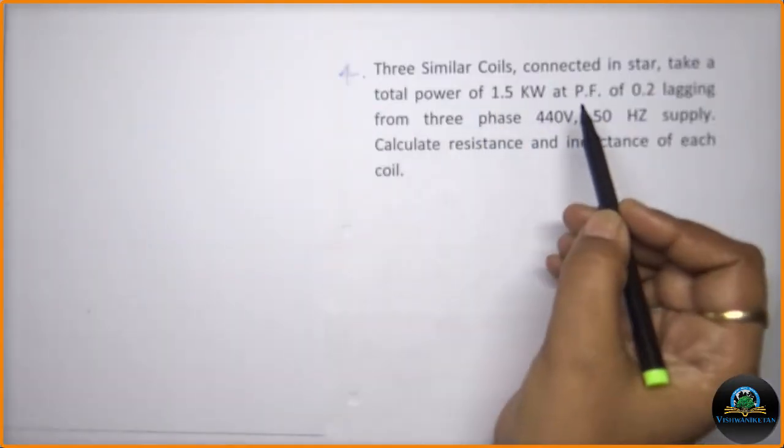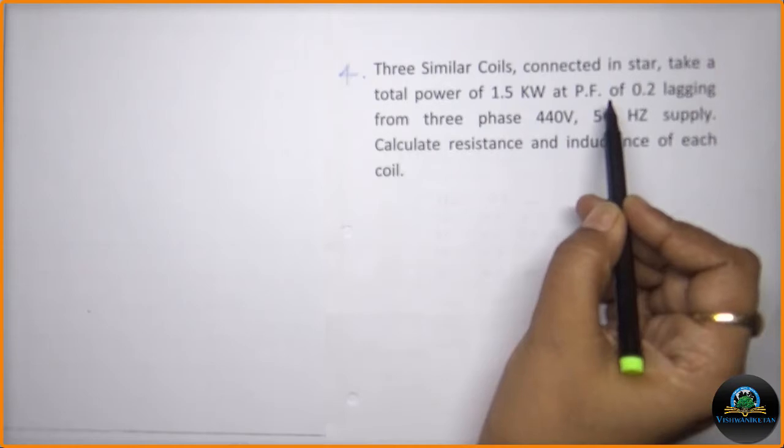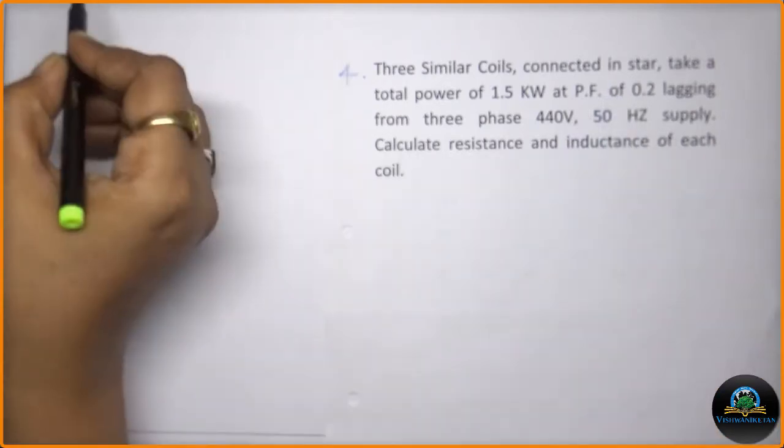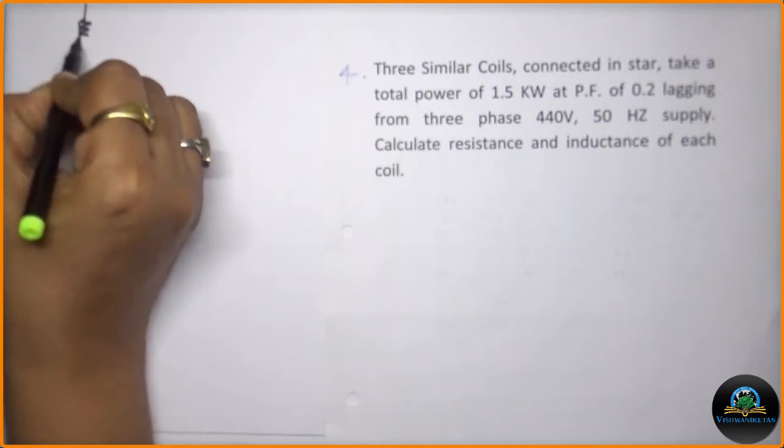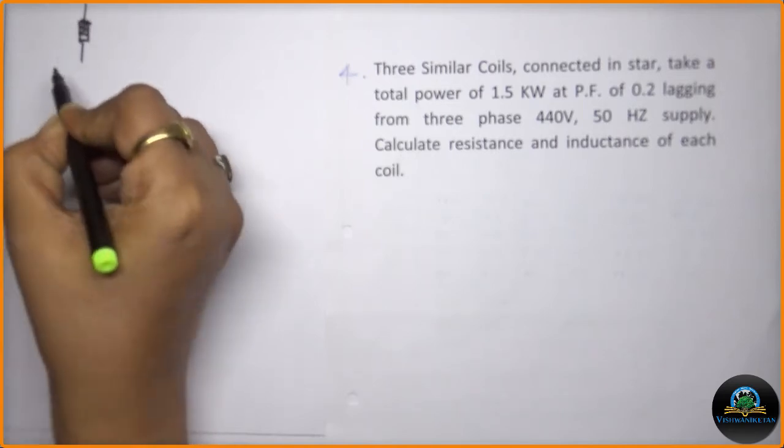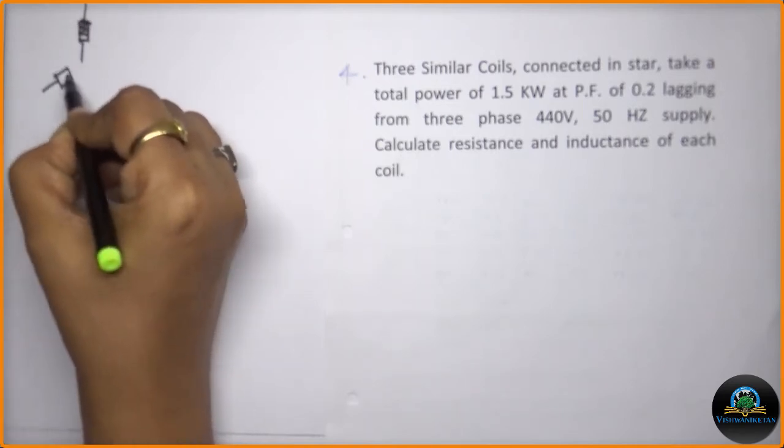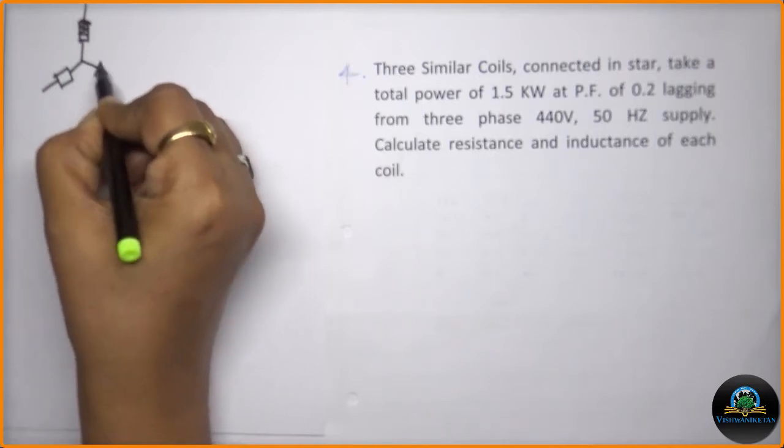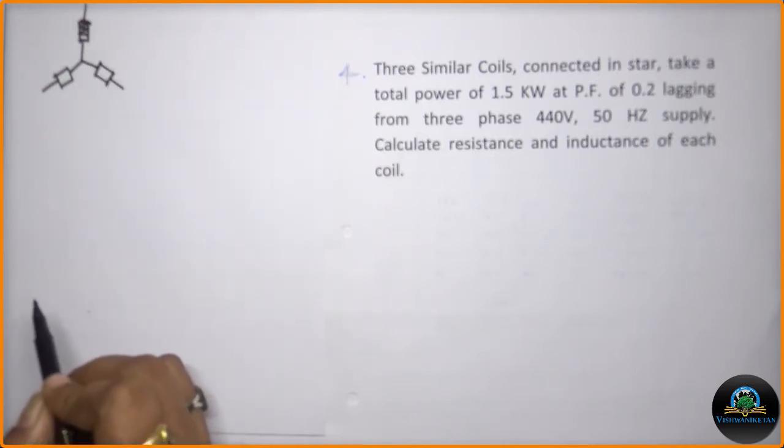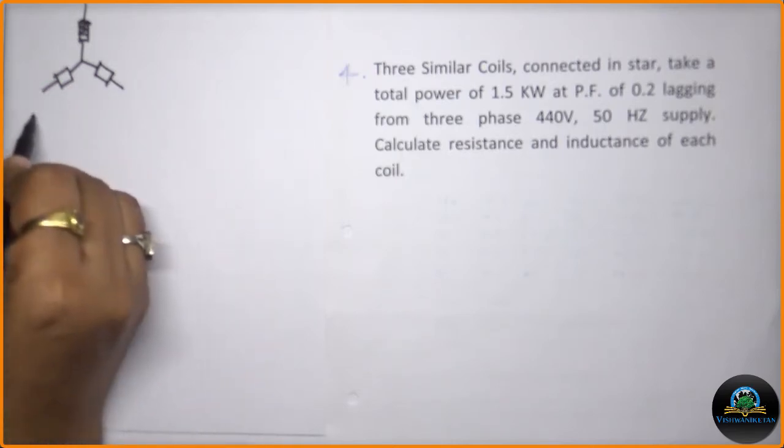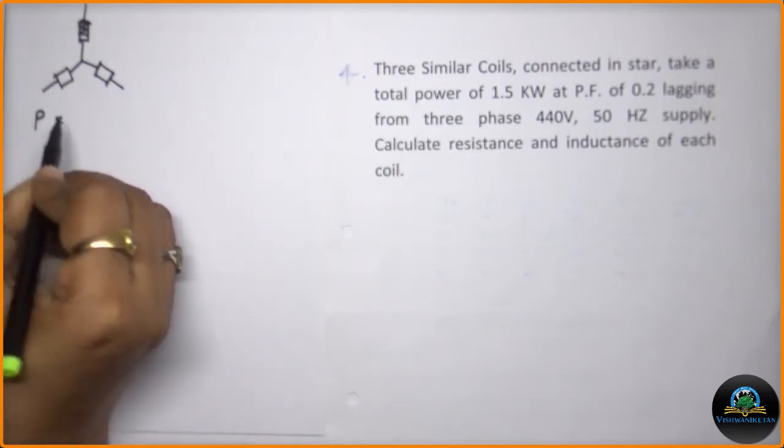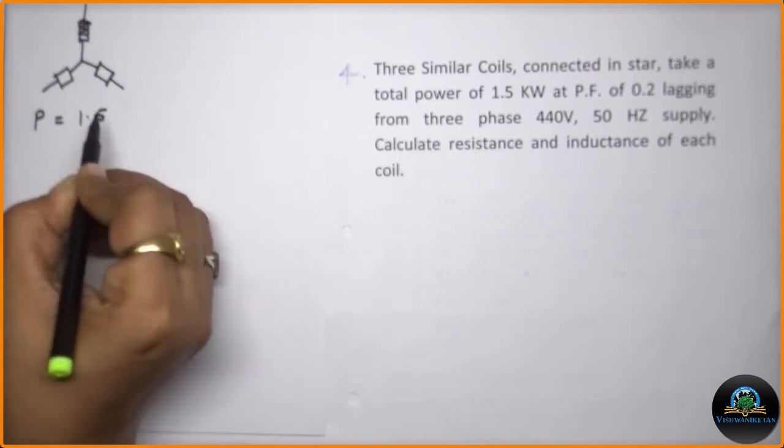Now from this problem it is very clear that it is a star connection. So first of all we will write down whatever values which are given to us. So it is a star connection.